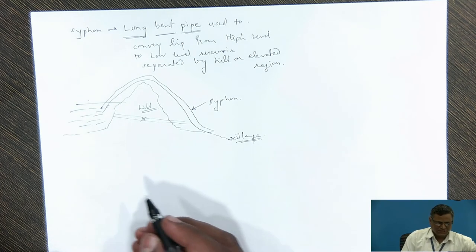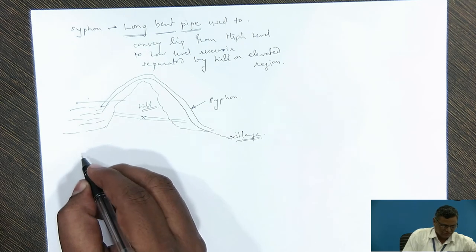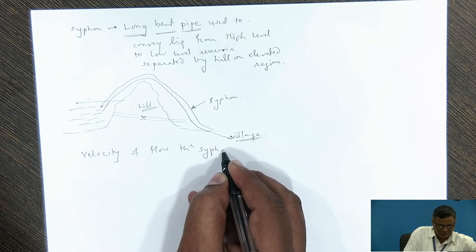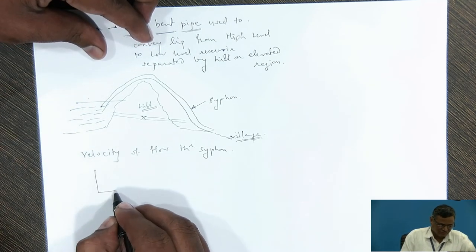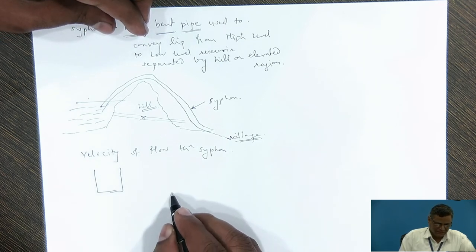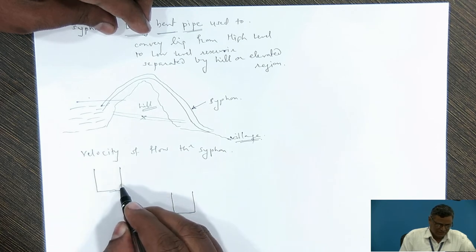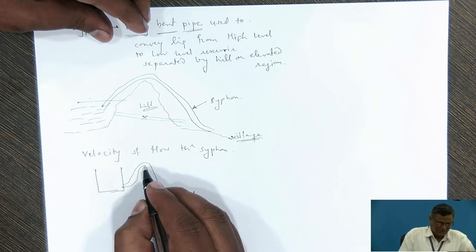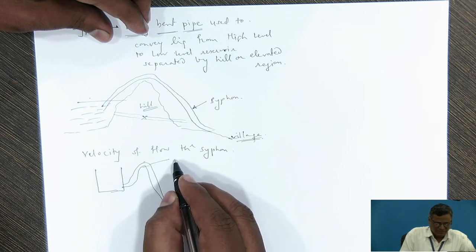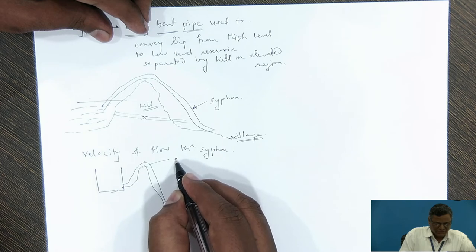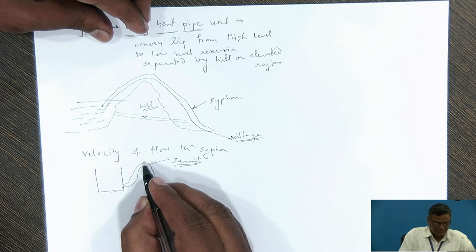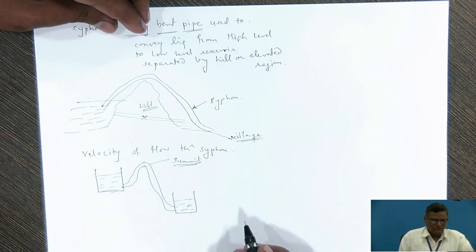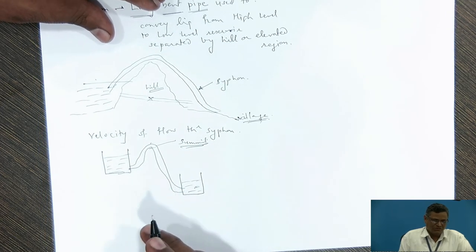Now let us come to the velocity of flow through the siphon. Consider one tank at a higher level and one tank at a lower level, connected by a siphon. The uppermost part — the highest level part of the siphon — is called the summit. We are interested in finding the velocity of flow occurring through this siphon.